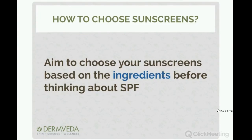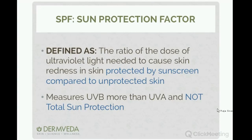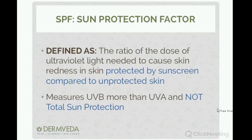SPF might be important but it's not the best way to choose sunscreens. What you want to do is choose your sunscreen based on ingredients before you think about SPF. SPF stands for Sun Protection Factor, and it's defined as the ratio of the dose of UV light needed to cause skin redness in skin protected by sunscreen compared to unprotected skin. So an SPF of 2 means you need twice the dose before your skin turns red compared to skin without that sunscreen.